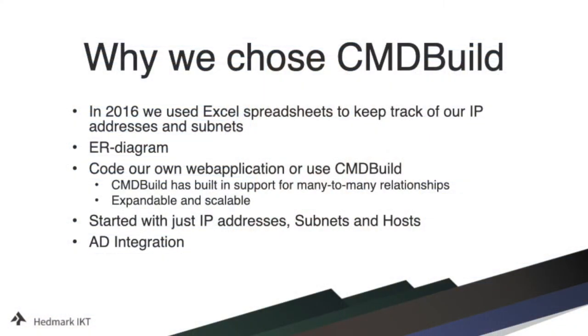And now to the more interesting parts — why we chose CMD Build. In 2016, we used Excel spreadsheets to keep track of our IP addresses, subnets, and host names. That's really tedious, because multiple people cannot edit this document at the same time, so you end up with a lot of copies and nobody knows which one is the correct one. You have no history when changes are made and no record of who changed what. You cannot make any sense of relationships between assets.